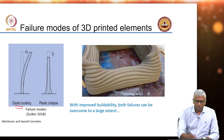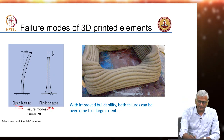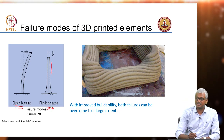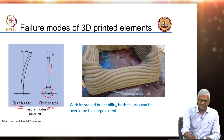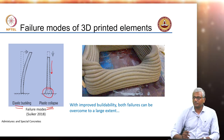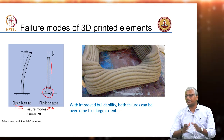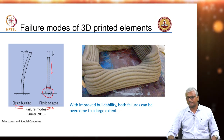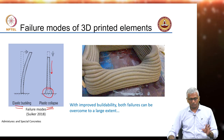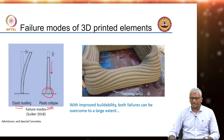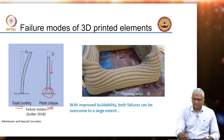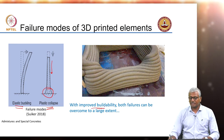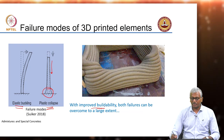Alternatively, you can also have a plastic collapse where the weight due to the layers above is simply too much for the lower layers to handle and they start bulging out. Both these types of failure can happen. With improved buildability, these failures can be avoided.